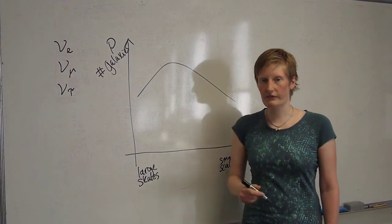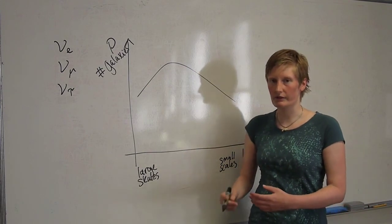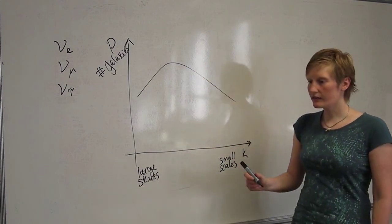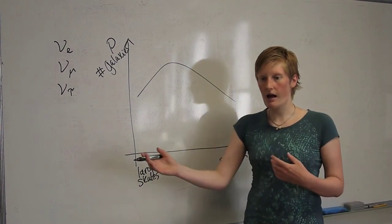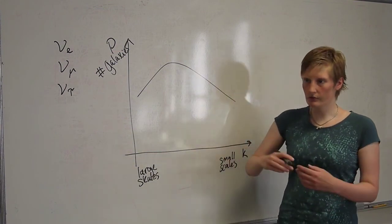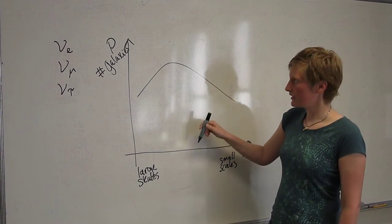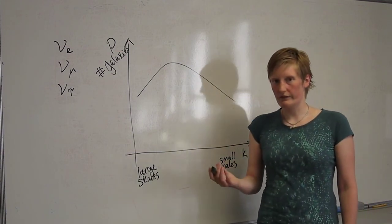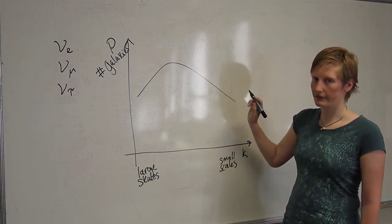And what happens is if the neutrinos have a very small mass, so of course they are light so they have very small masses but very very small mass, then in the early universe their speed will be very high so they will move over huge distances and they will affect a huge range of scales. But since they only have very little mass they will only affect the structure formation very little. So we'll have something that looks like this.